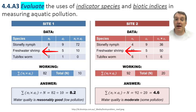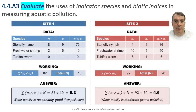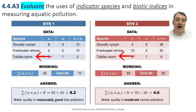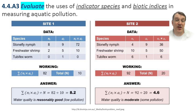Freshwater shrimp can tolerate moderate levels of pollution, but still need relatively good water quality to survive. They occupy a middle ground in pollution tolerance, making them useful indicators of intermediate water quality conditions. Their presence typically suggests a biotic index value between 4.0 and 6.0. Tubifex worms, in contrast, are highly tolerant of pollution and can survive in severely degraded conditions with very low oxygen levels. When we find only tubifex worms with few or no other species present, that usually indicates significant pollution problems, typically corresponding to a biotic index value above 7.